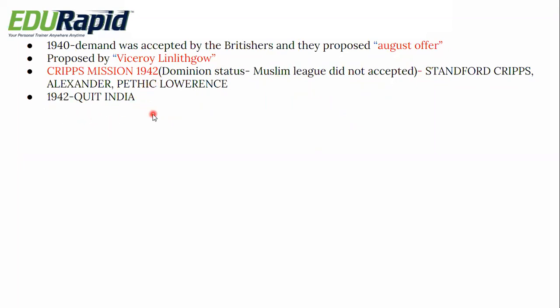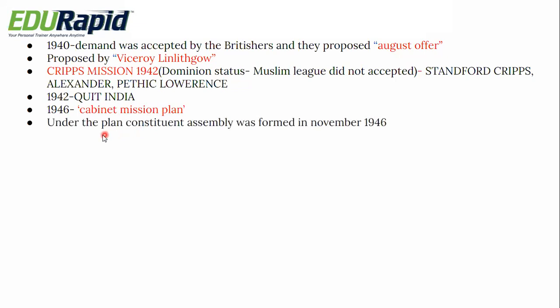In 1942, the Quit India Movement was started by Mahatma Gandhi. Four years later, they started the Cabinet Mission Plan, and under this plan, the Constituent Assembly was formed in November 1946. So the Constituent Assembly was first proposed by M.N. Roy in 1934, officially demanded by the Indian National Congress in 1935, and ultimately formed in 1946 through the Cabinet Mission Plan.